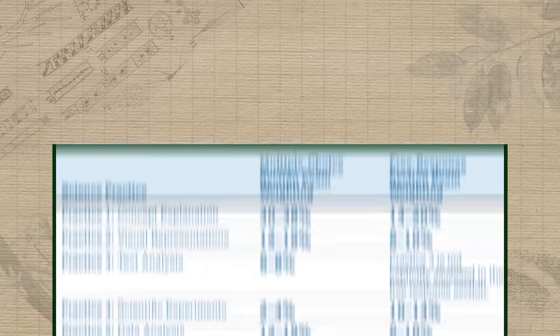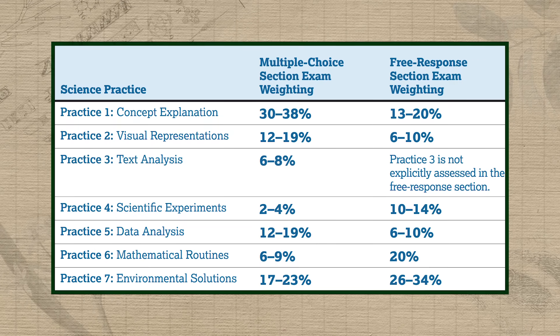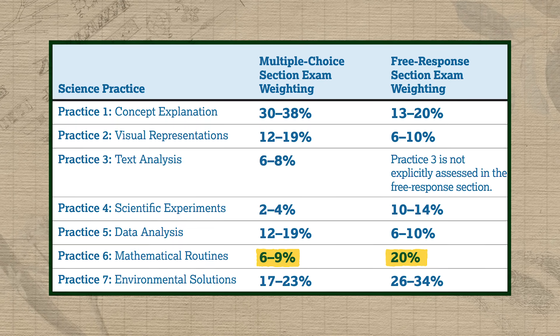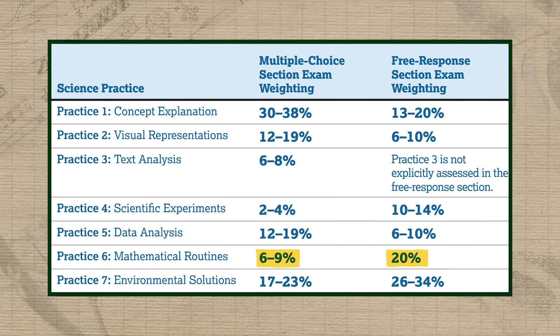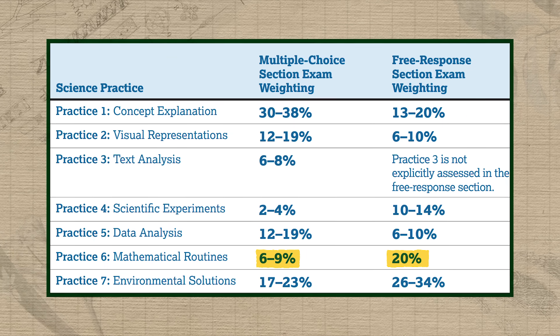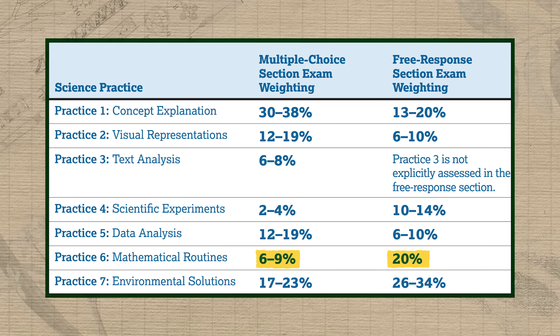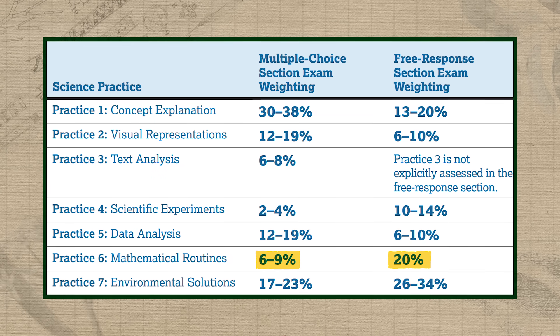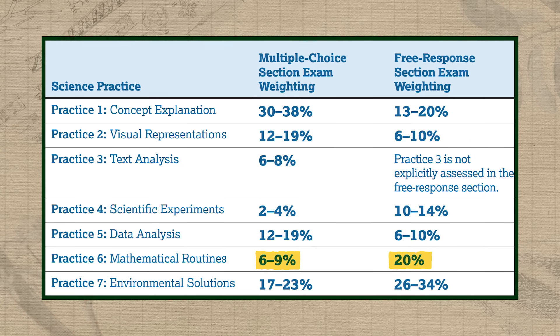Before we get into the different types of math problems you'll be asked to do on the APES exam, let's set the overall context and review what proportion of the exam will be math-based. According to the APES course and exam description, you can expect 6–9% of the multiple choice questions and 20% of the FRQ questions to be calculation-based. Since the multiple choice portion is worth 60% of your overall score and the FRQ portion is worth 40%, math-based questions will make up about 12–13% of your final score.